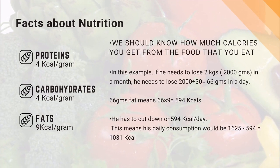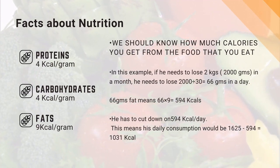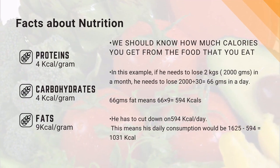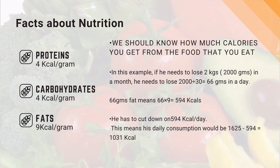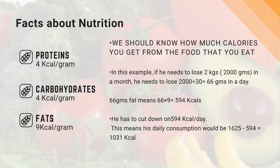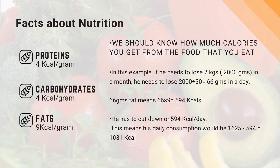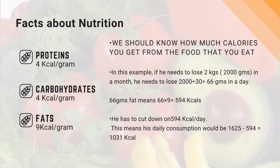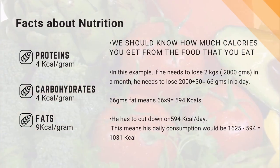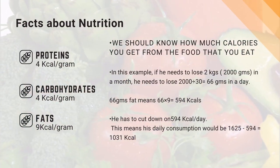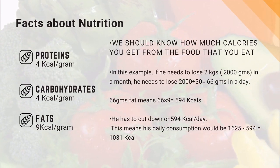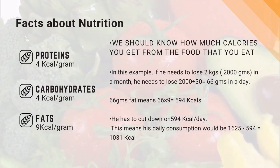Managing your body weight is nothing but maintaining the balance between the calories that you consume and the calories that you burn. You need to know the facts regarding nutrition and physical workouts, and how many calories you get from the food you eat. Carbohydrates give you 4 kilocalories per gram, proteins give you 4 kilocalories per gram, and fats give you 9 kilocalories per gram.